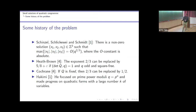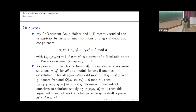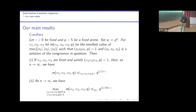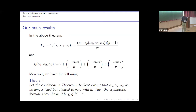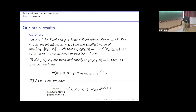That is what Heath-Brown was able to beat in the case of square-free moduli, getting 5/8. We are in the complementary situation of prime power moduli. What we get is 11/18 by a very different method. An equidistribution result like that implies the existence of solutions, which is summarized in a corollary.